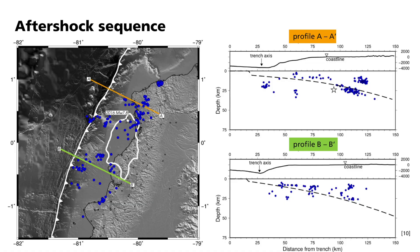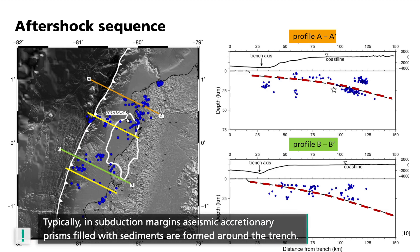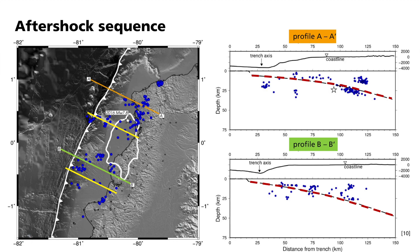The mainshock of the Pedernales earthquake took place on a very shallow dipping subduction zone. For the aftershocks, it is mostly the same — the localizations give us insight about the exact distribution of the aftershock sequence. Most of them are distributed along the plate interface, but we also found some crustal activity in the overriding plate. The distribution shows some streaks perpendicular to the trench. Aftershocks with magnitudes greater than 4 occur outside the rupture area of the mainshock and reach up to the trench. This is not common in subduction margins, where typically a seismic accretionary prism filled with sediments forms around the trench. Another important feature is an area without earthquakes, which seems to be a common behavior in this region but remains under discussion.